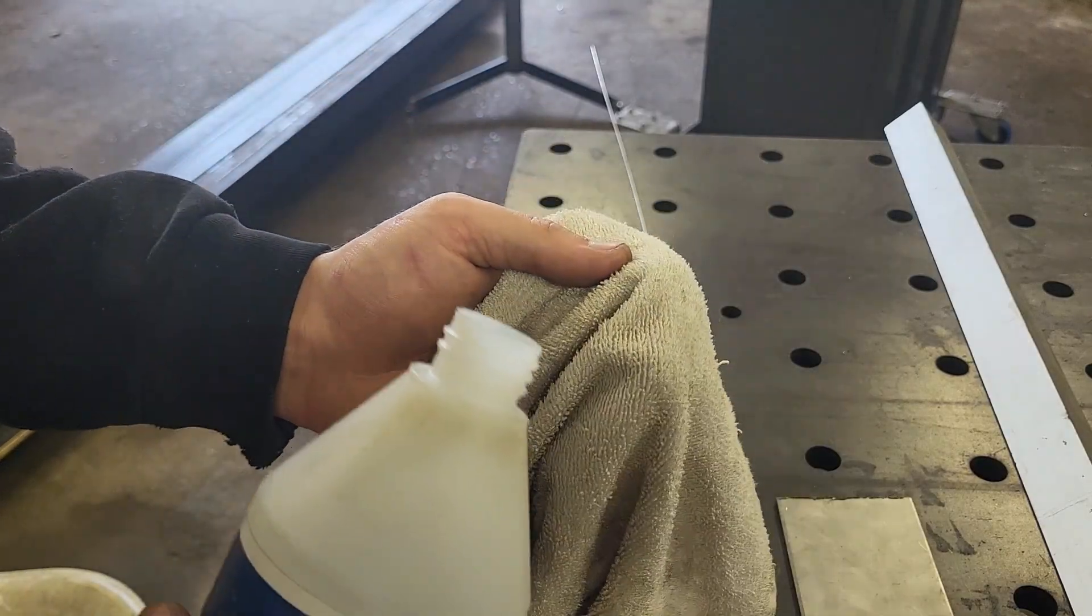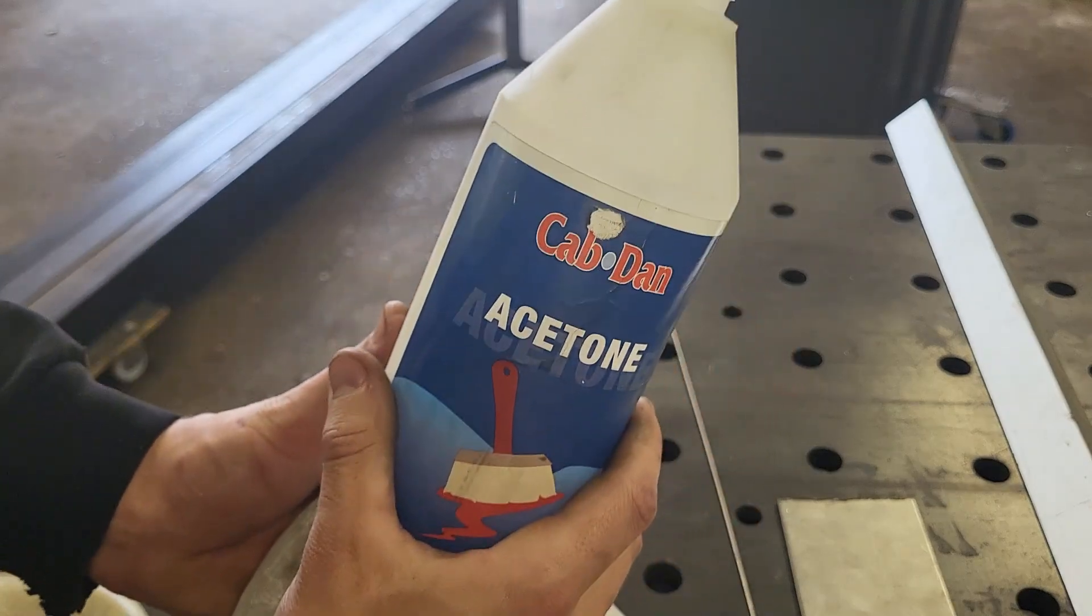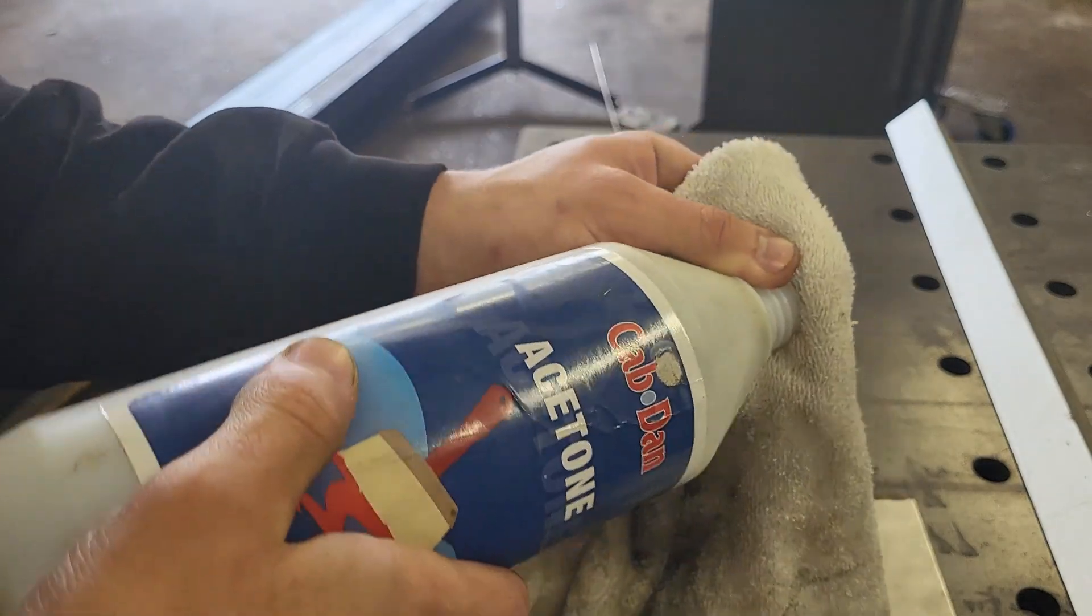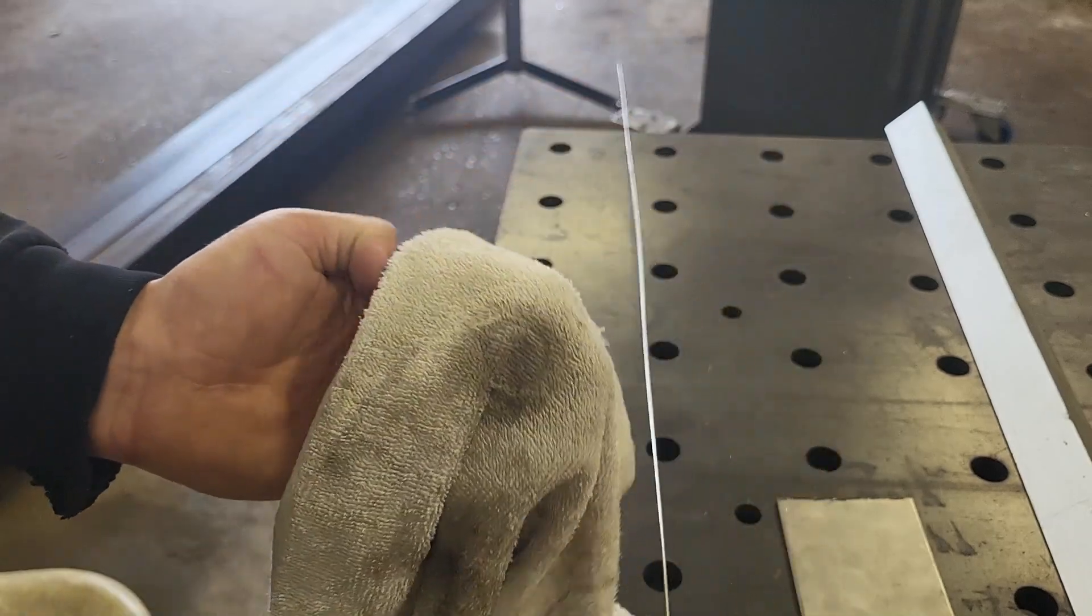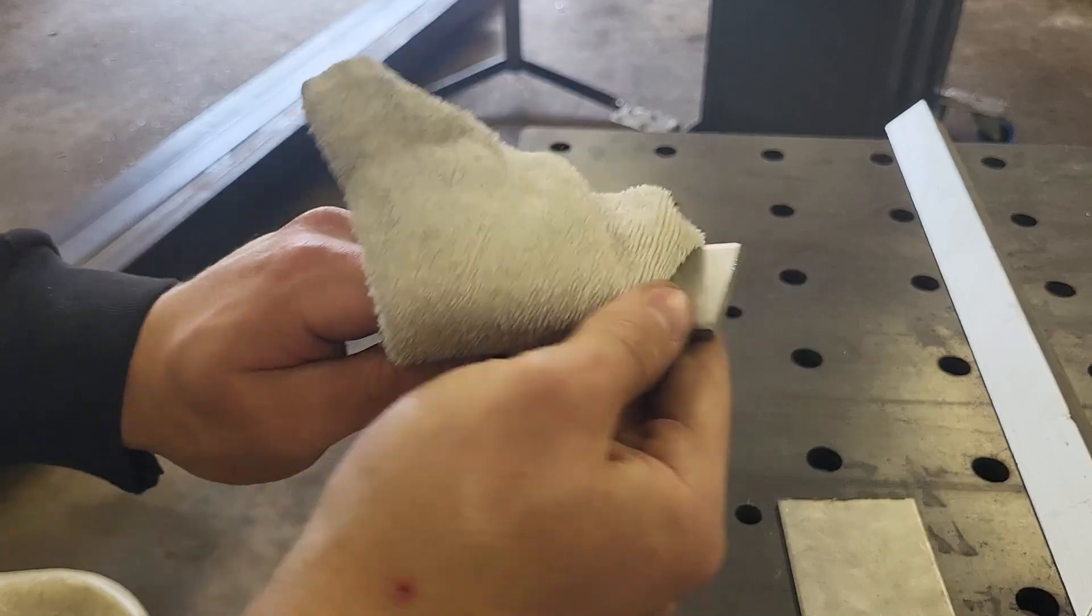When TIG welding, it's very important to have proper and clean materials. So I usually just take some acetone and pour a batch on a cloth, and then I take both my welding wire and my materials and I wipe them off.